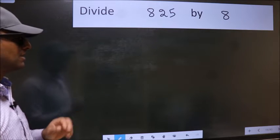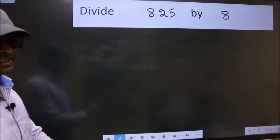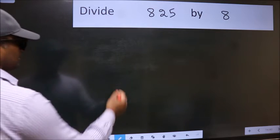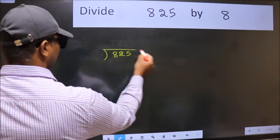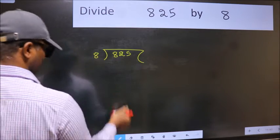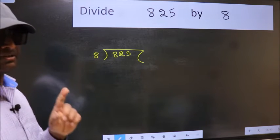Divide 825 by 8. To do this division, we should frame it in this way: 825 here, 8 here. This is your step 1.